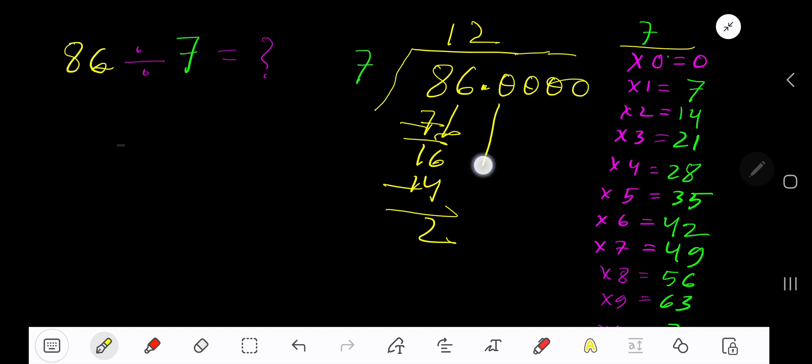Bring down the first 0. Look, before the digit there is a decimal. The decimal must come to the quotient directly. 7 goes into 20 how many times? 3 times 21, which is too large, so 2 times. 2 times 7 is 14. If you subtract, you are getting 6.